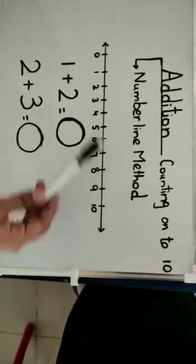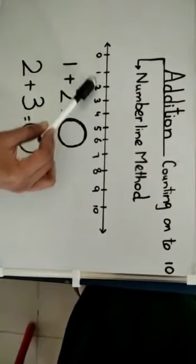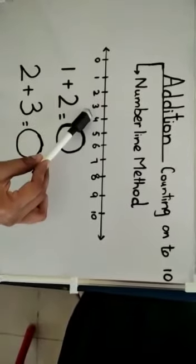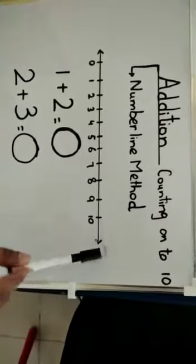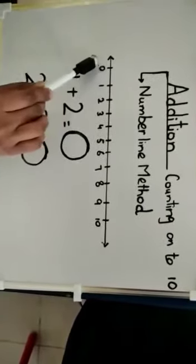So basically number line is a straight line on which numbers are represented and this line is having arrows on both sides. It always starts with number zero.